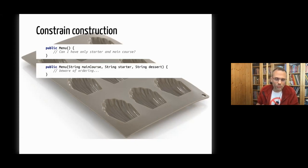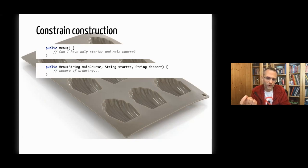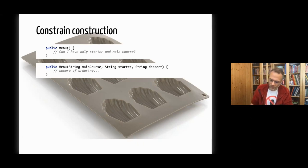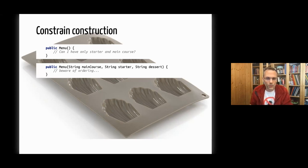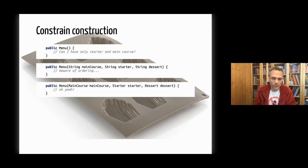A better way is to introduce a constructor where every mandatory property is passed. But even that's not ideal — we could still accidentally pass the starter as the first argument, which is a likely mistake. The solution: introduce types — a type for the main course, a type for the starter, a type for the dessert. A bit more work, but it removes that class of problem.